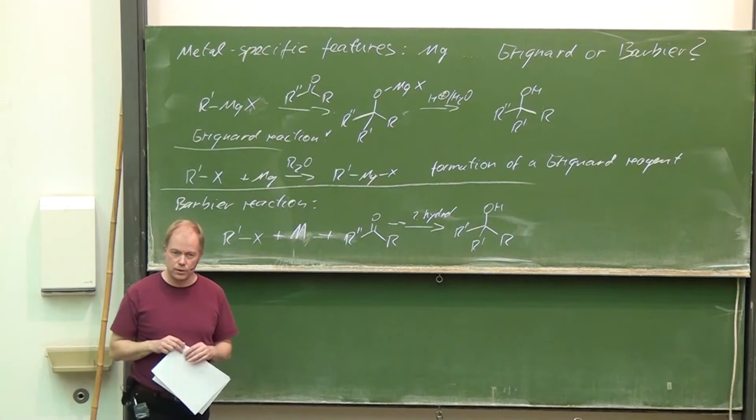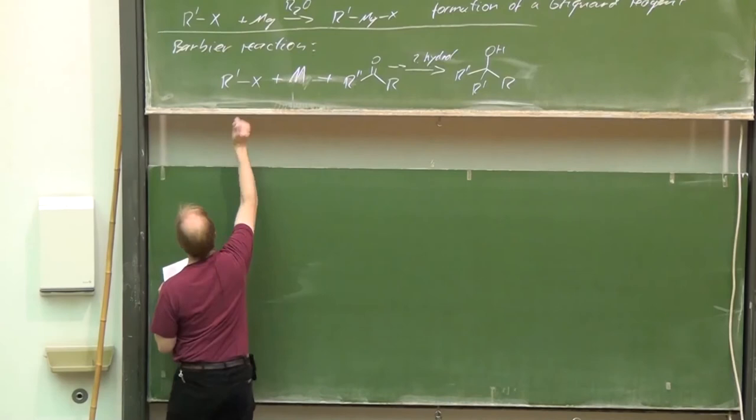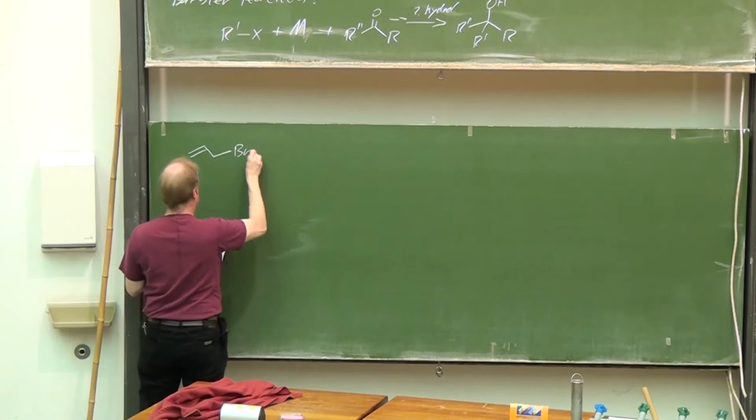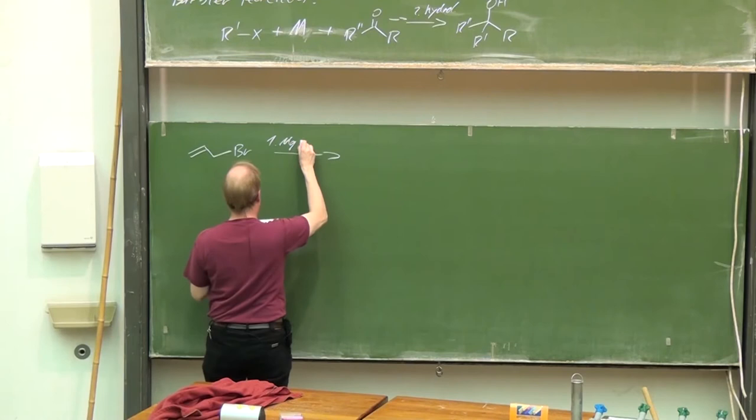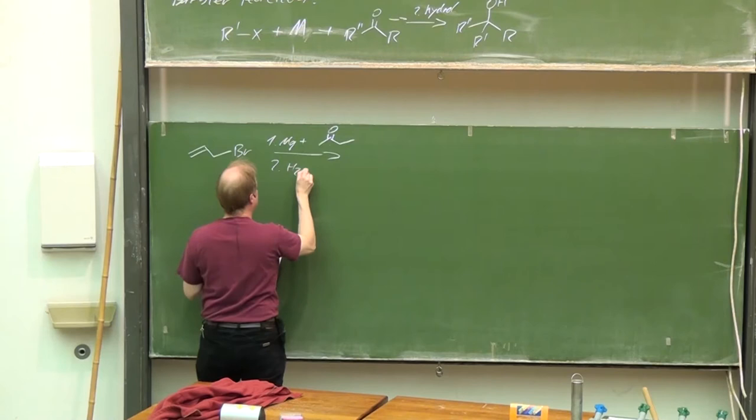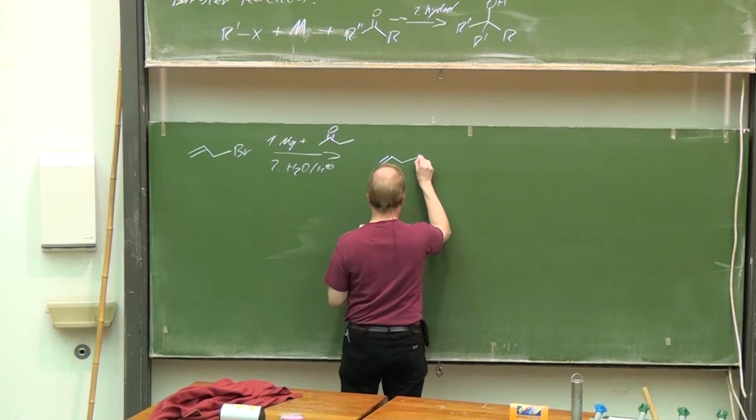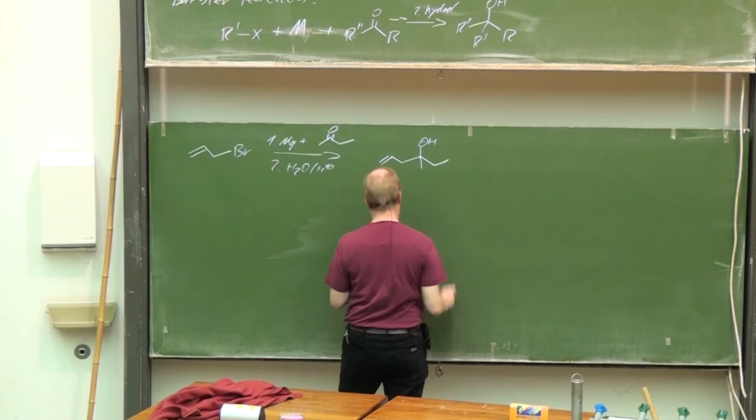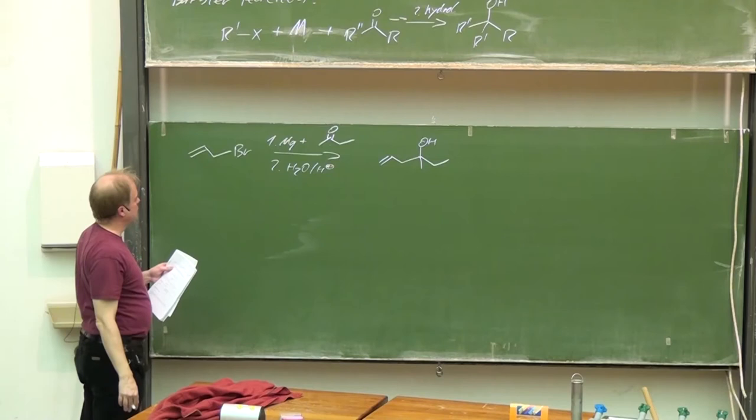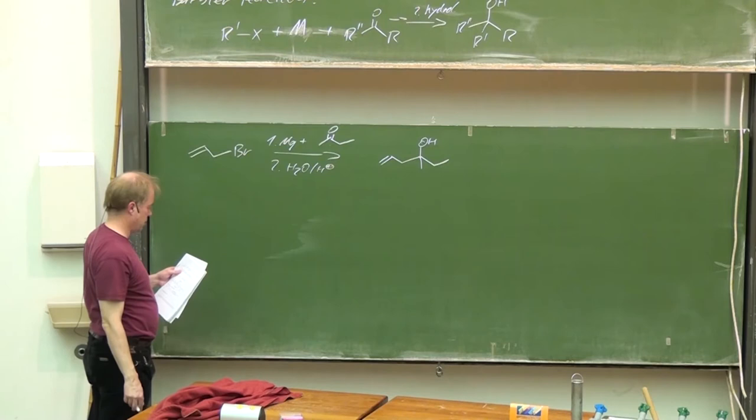Mainly it's in use if you have allylic or benzylic halides as substrates. Simple example: magnesium plus ketone already present, then hydrolysis. We will get normally rather good results—in this case, the tertiary alcohol, the homoallylic alcohol.